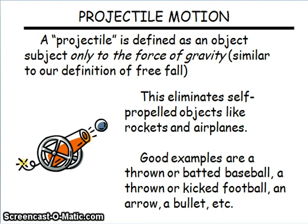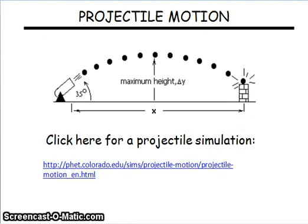Baseball, football, a bullet - those are all examples. This is the kind of path that the object would take. If you want to do a simulation on projectiles, you can go to that website indicated below. It's a pretty good simulation.